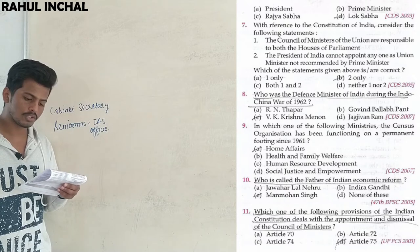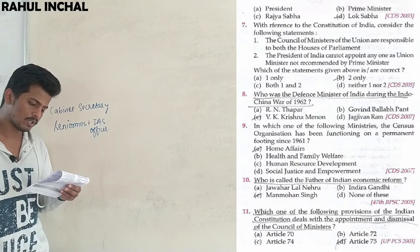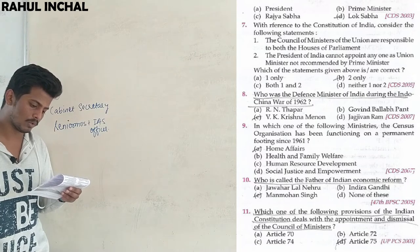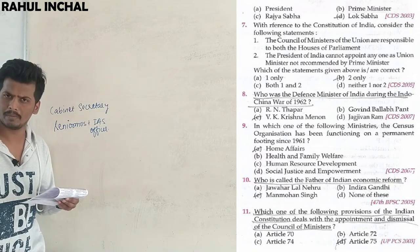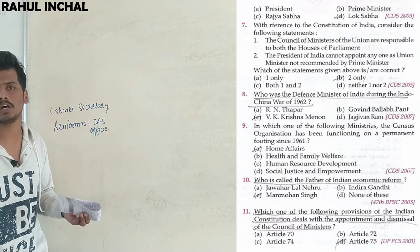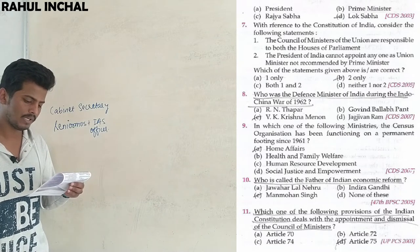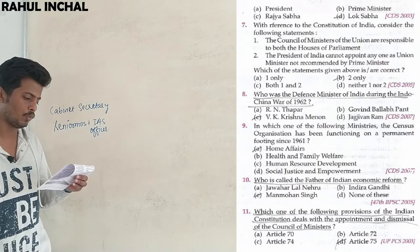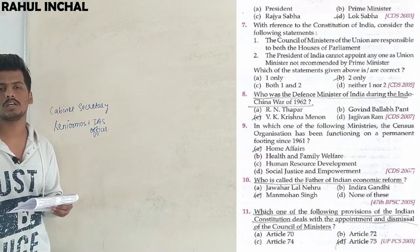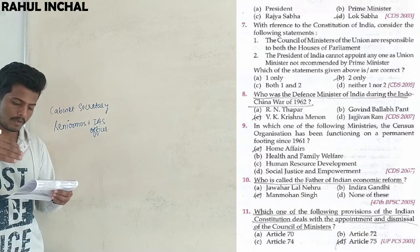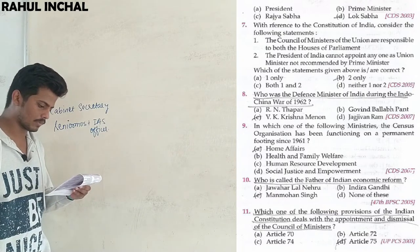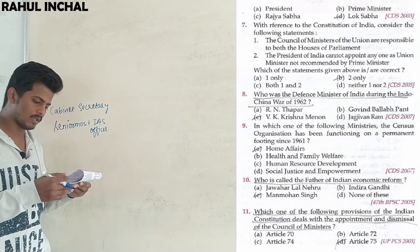With reference to the Constitution of India, consider the following statements. Statement one: The Council of Ministers of the Union are responsible to both Houses of Parliament — this is incorrect. They are only responsible to the Lok Sabha. Statement two: The President of India cannot appoint anyone as Union Minister who is not recommended by the Prime Minister — this is correct. The Prime Minister recommends ministers and the President appoints them. So only statement two is correct.